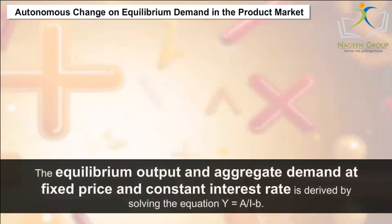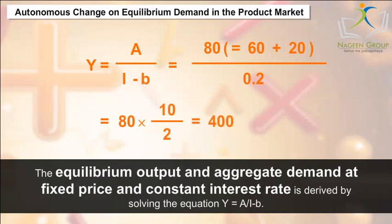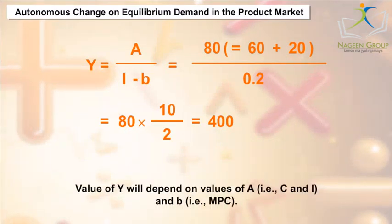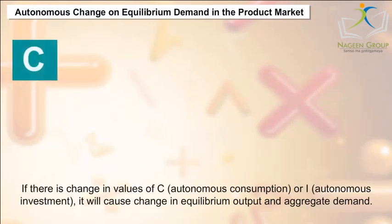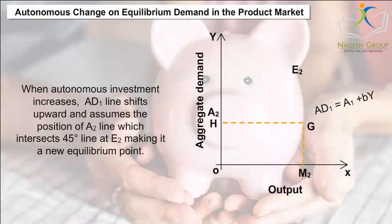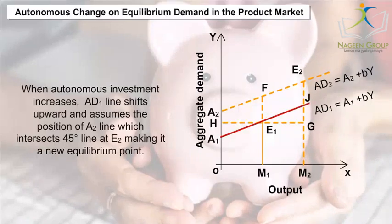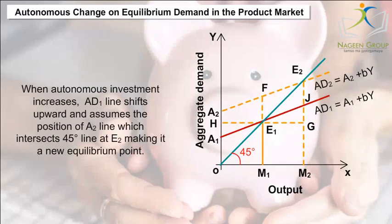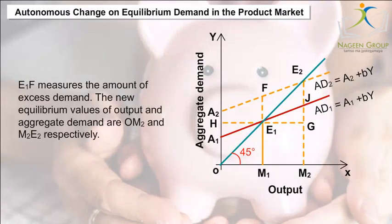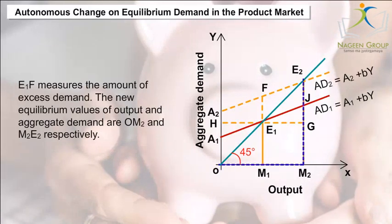Autonomous change on equilibrium demand in the product market: The equilibrium output and aggregate demand at fixed price and constant interest rate is derived by solving the equation Y = A/(1 − B). The value of Y depends on the values of A (i.e., C̄ and I) and B (i.e., MPC). Thus, if there is a change in values of autonomous consumption (C̄) or autonomous investment (I), it will cause a change in equilibrium output and aggregate demand. When autonomous investment increases, the AD1 line shifts upward to AD2, intersecting the 45-degree line at E2 as the new equilibrium point. E1F measures the amount of excess demand, and the new equilibrium values of output and aggregate demand are OM2 and M2E2 respectively, greater than initial values because of the investment multiplier effect.